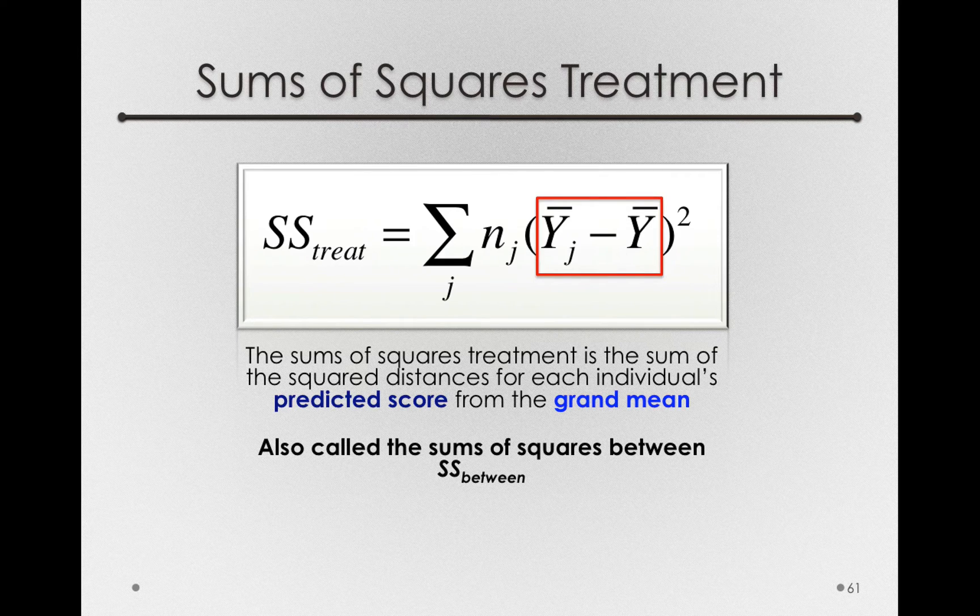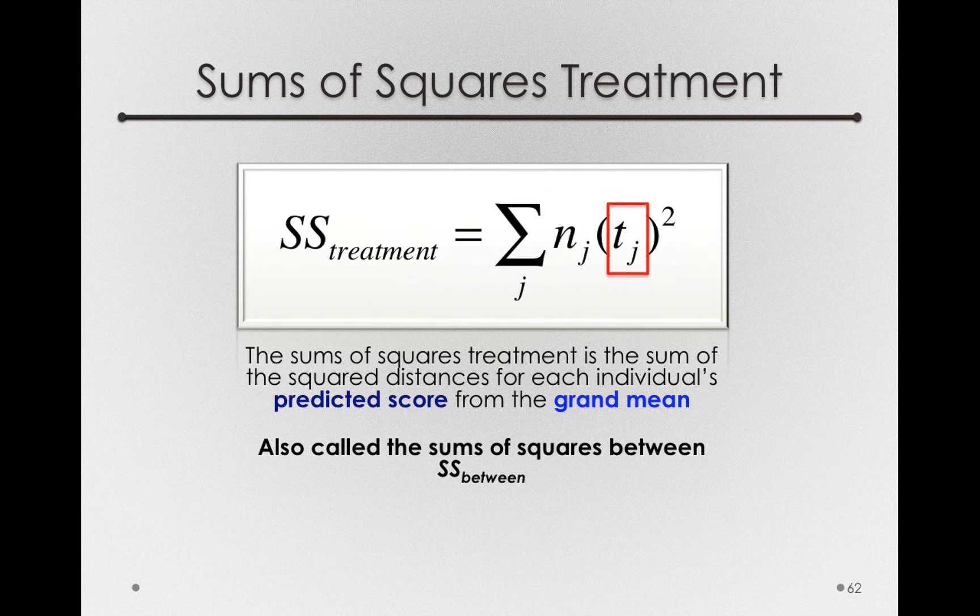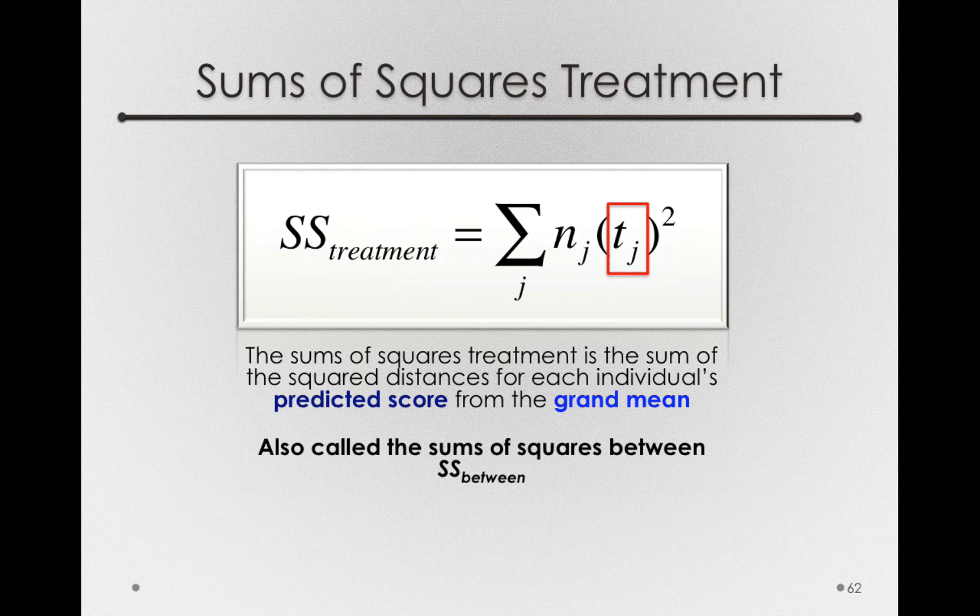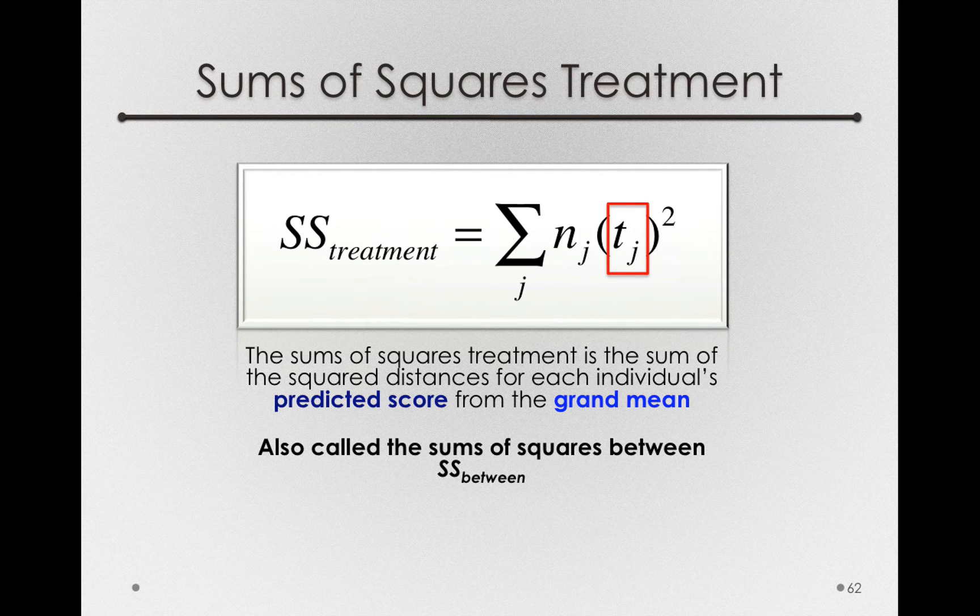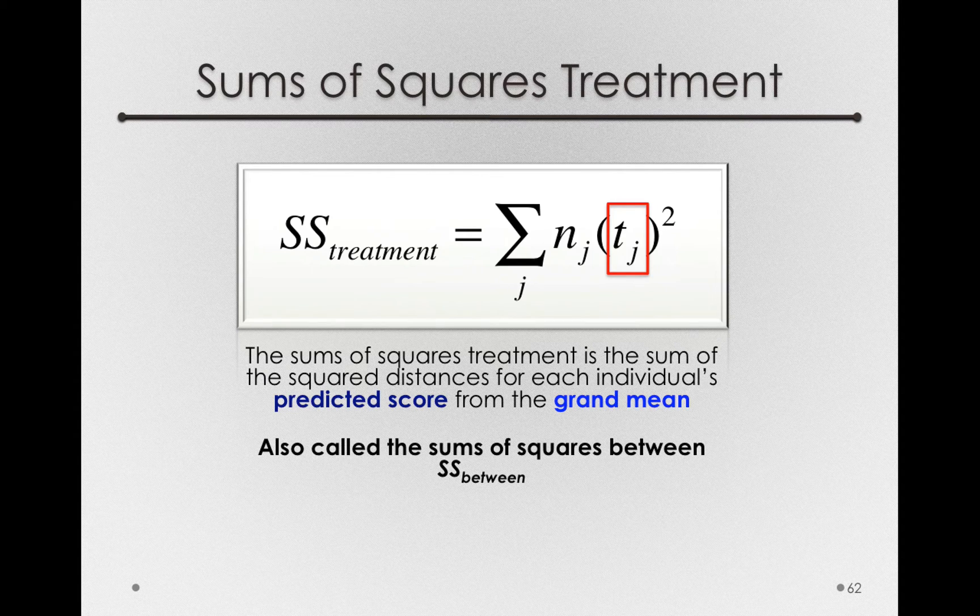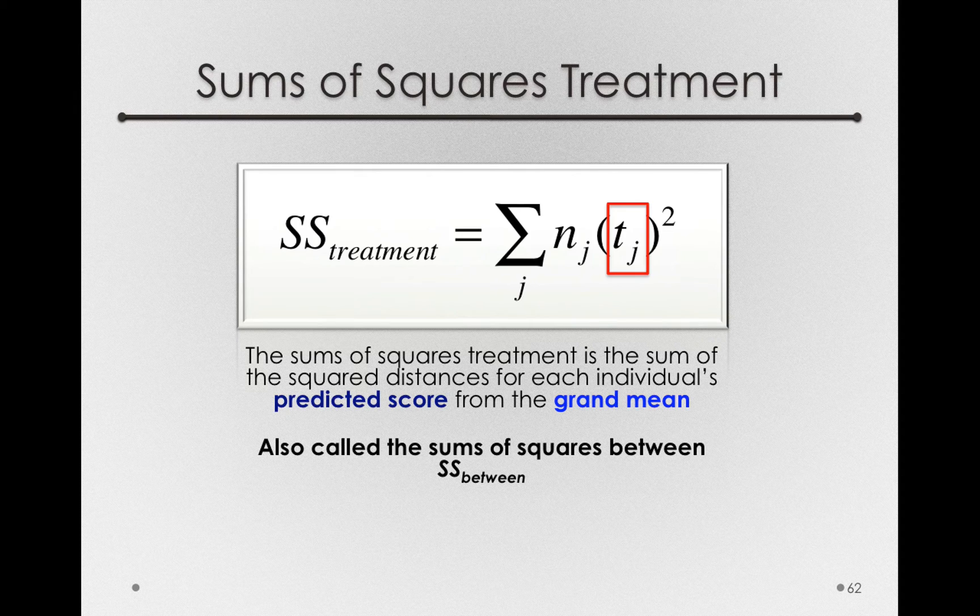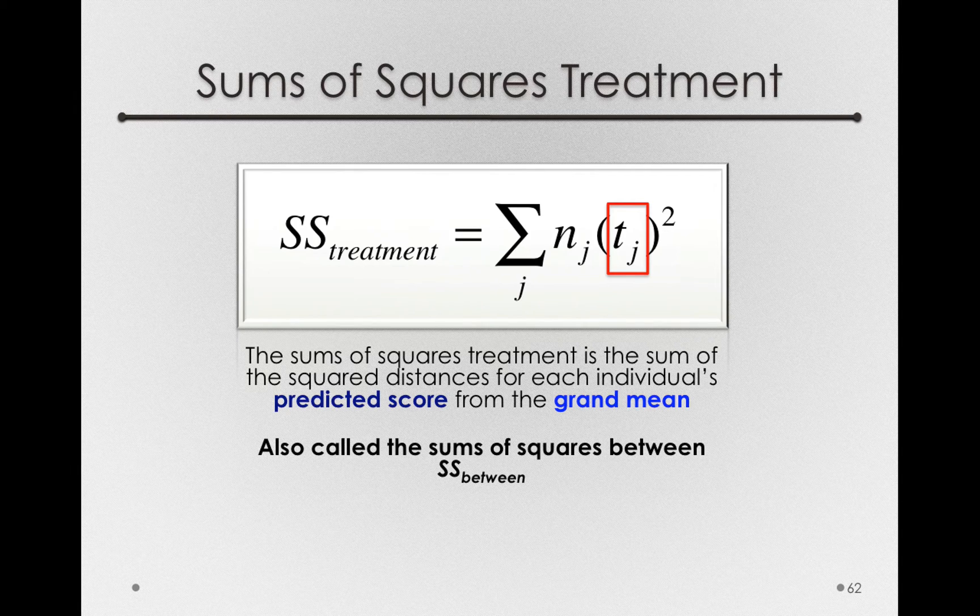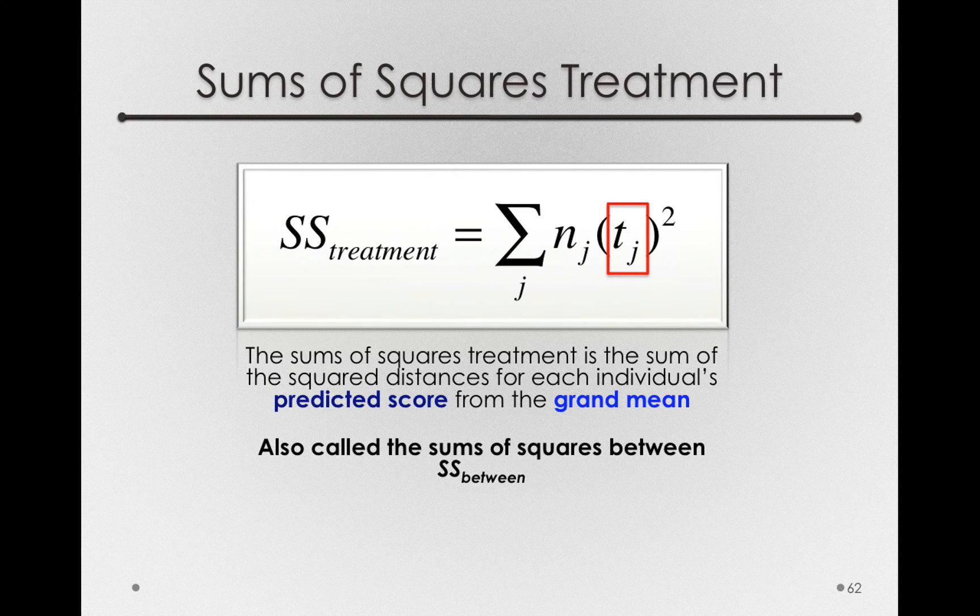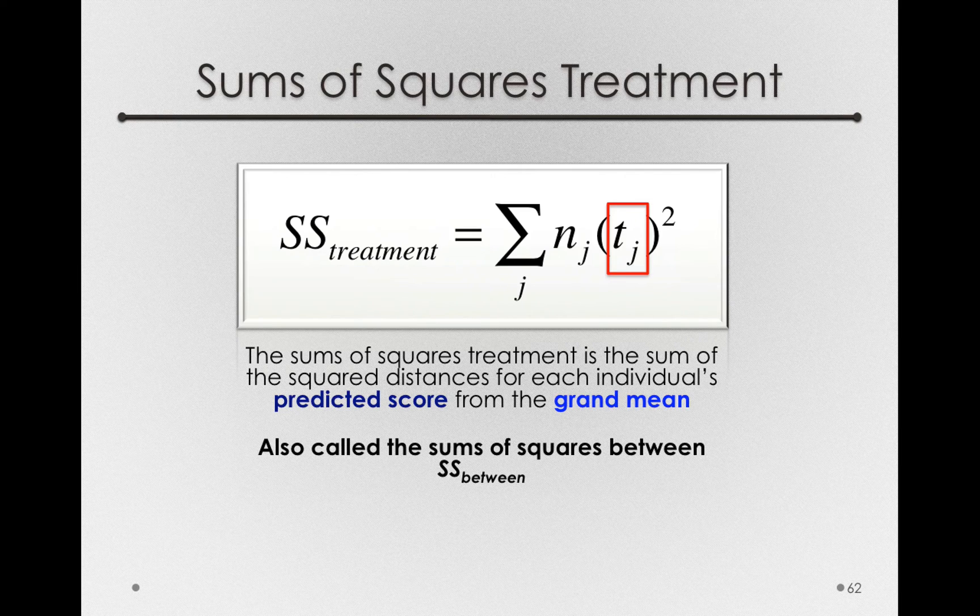This piece is simply the t sub j's, that is the treatment offset between the grand mean and the mean for that group. So we can write the sums of squares treatment in a simpler form: the number of people in each group multiplied by the treatment offset for that group squared.